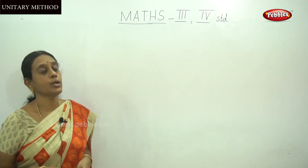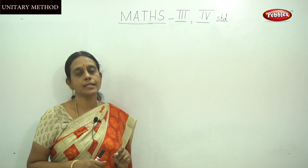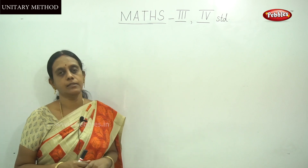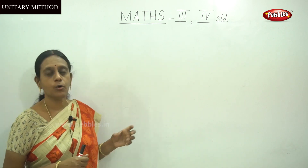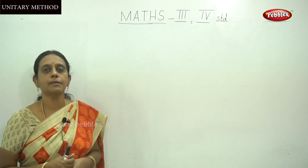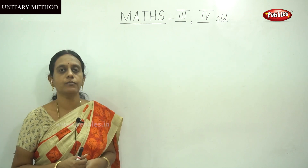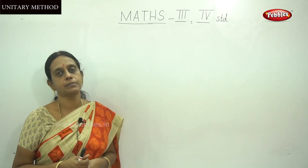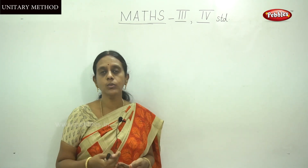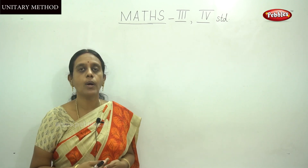Dear children, today we are going to learn about money — specifically the unitary method. The unitary method means we calculate the value of each item from the value of a few items. We are going to calculate the cost of one item from the cost of given items.